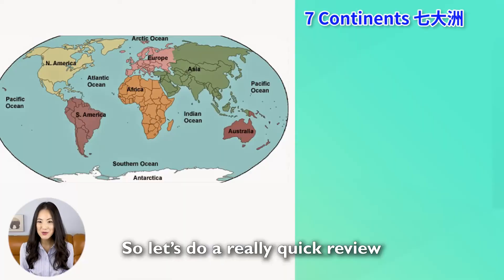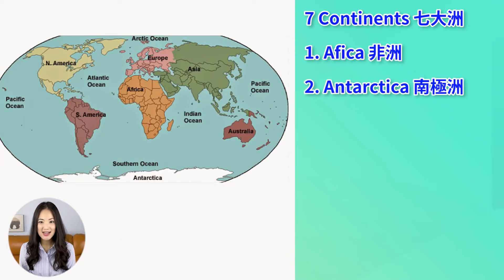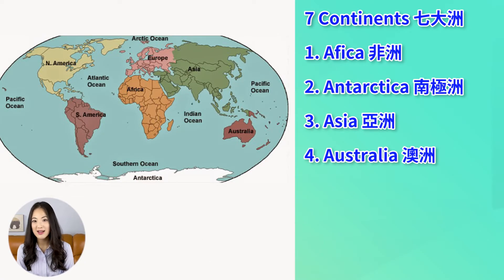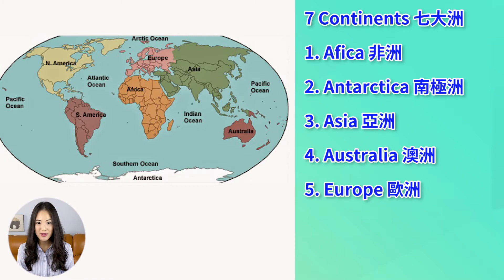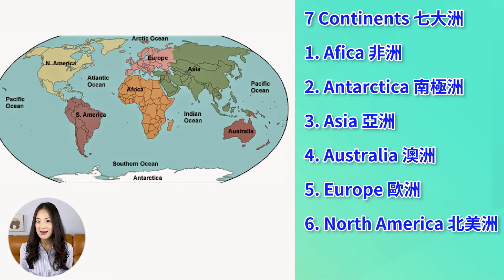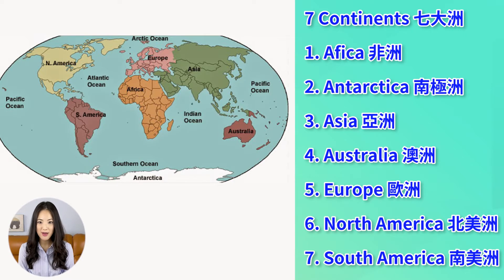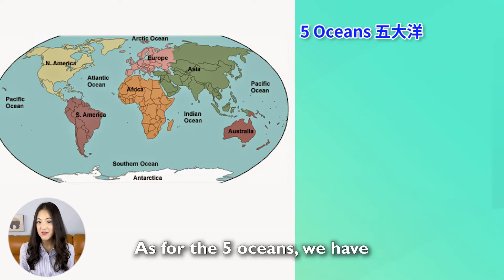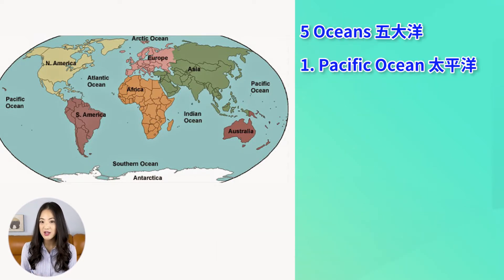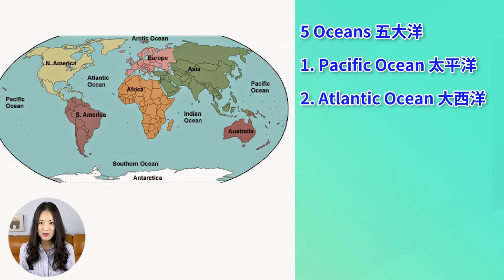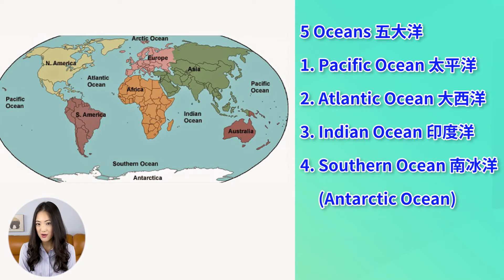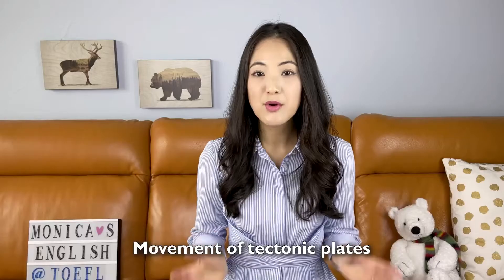So let's do a really quick review. The seven continents are: Africa, Antarctica, Asia, Australia, Europe, North America, and South America. As for the five oceans, we have the Pacific Ocean, Atlantic Ocean, Indian Ocean, Southern Ocean, and Arctic Ocean.